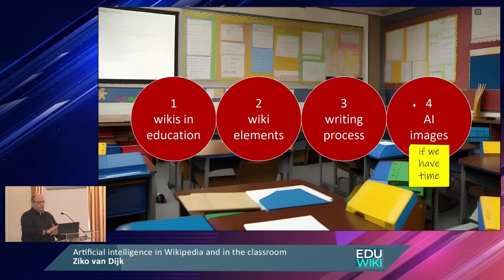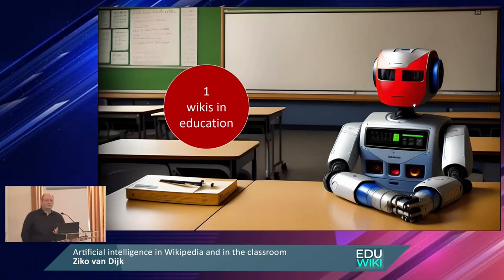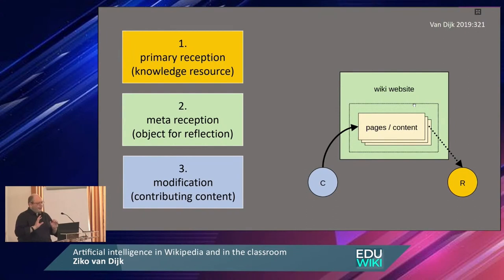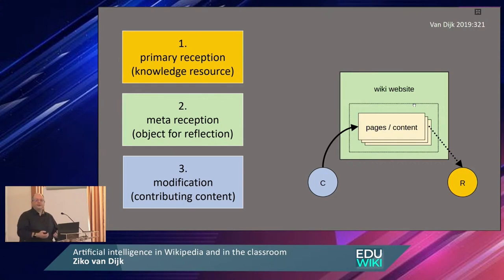Wikis in education — what do we do in education with wikis? There are different ways to use it. In class, you can use Wikipedia as a knowledge source: you tell the students, go to Wikipedia, read the article. Meta-reception means you use it as an object to talk about and analyze — what is the background of Wikipedia, how does it work, where can you click? And the third is modification. Most people think about Wikipedia in education, it's about writing articles in the classroom, but not always. And often for the third you need the second — you have to talk about how a wiki works.